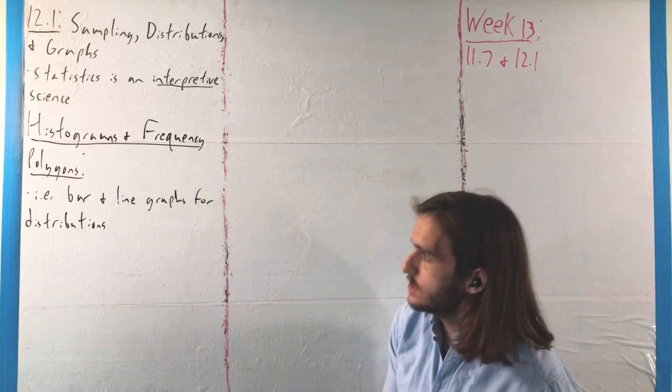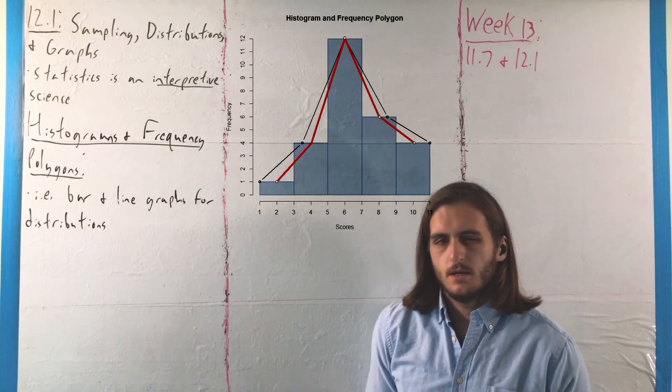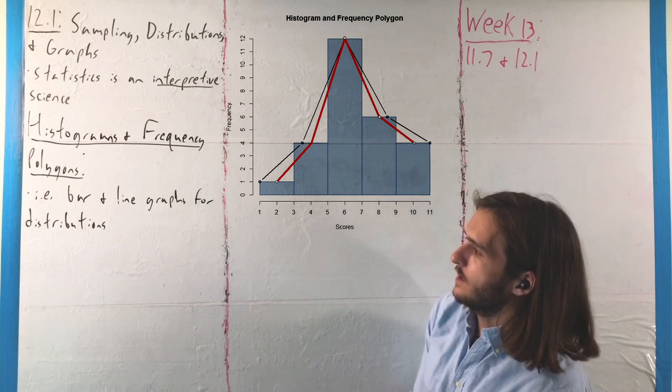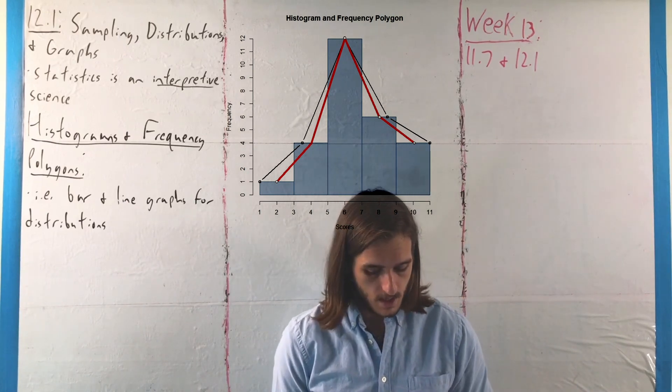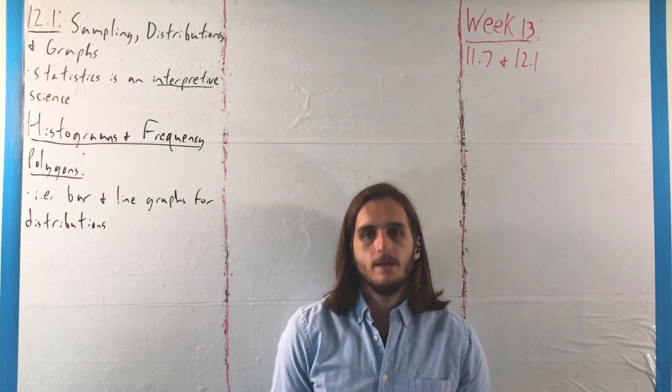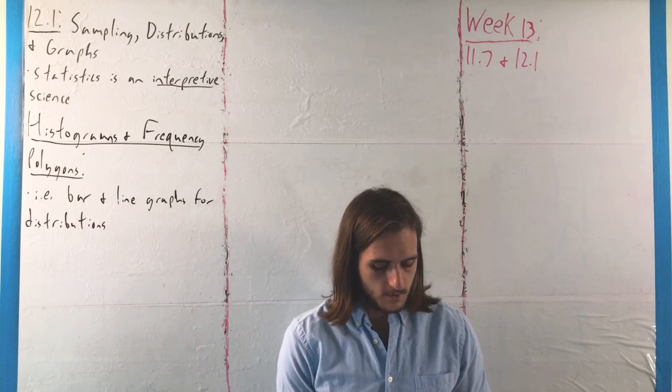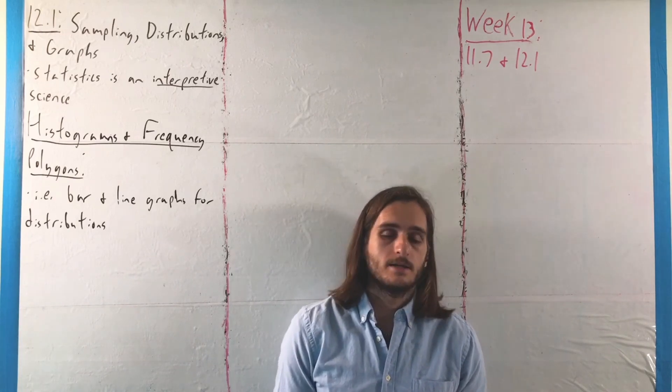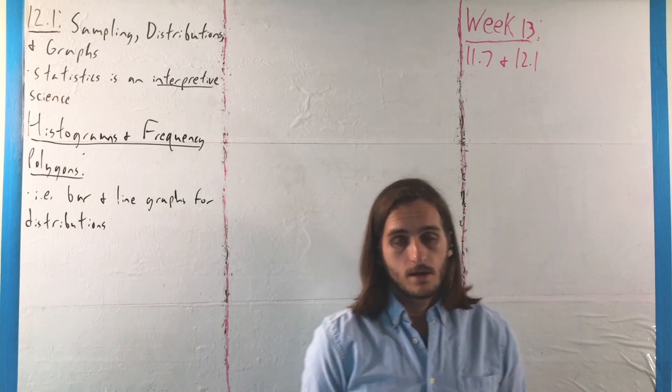And the two main ways we're going to look at it here are in terms of histograms and frequency polygons, that is special kinds of bar and line graphs designed for showing off frequency distributions, where a histogram is just a bar graph where the heights, or sometimes the widths if you see them written horizontally, represent the frequency in each class, and each bar corresponds to a single class.